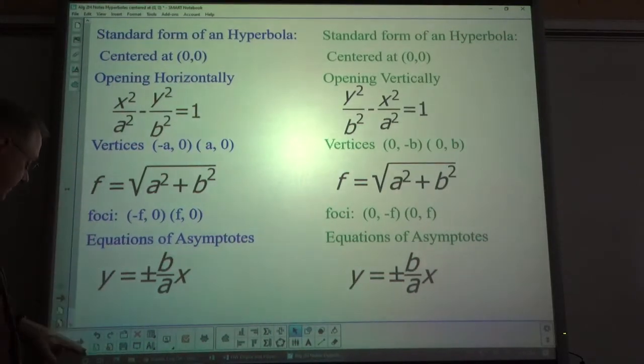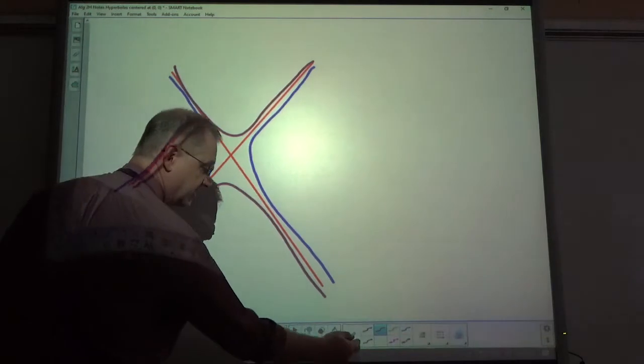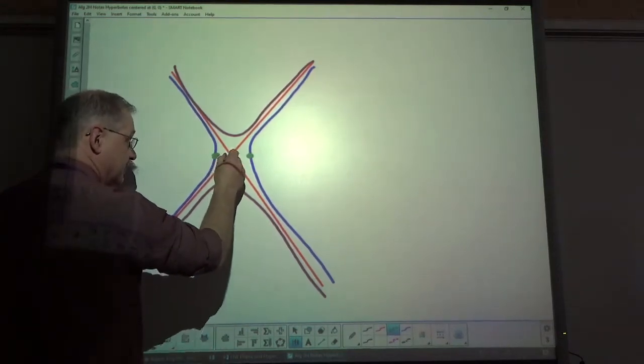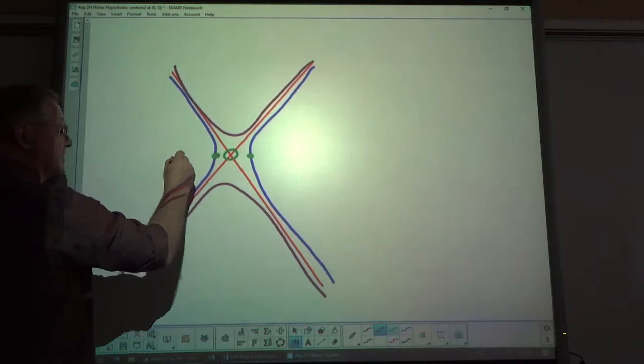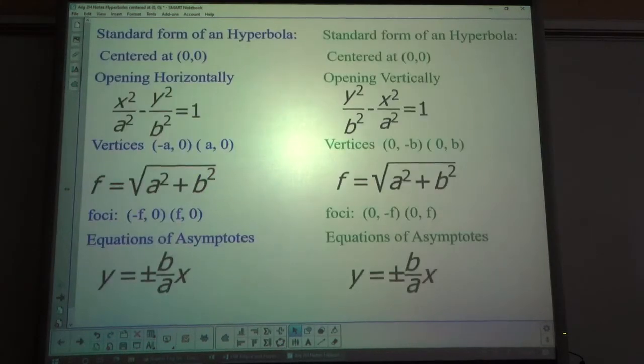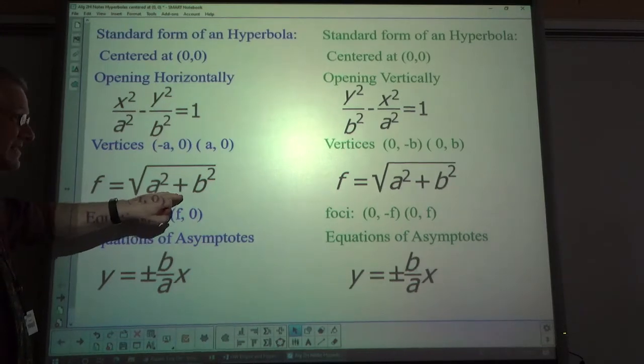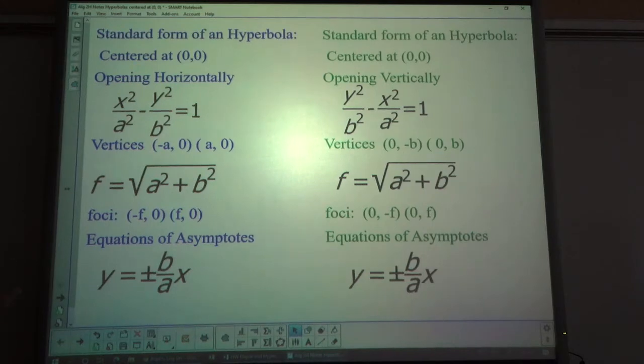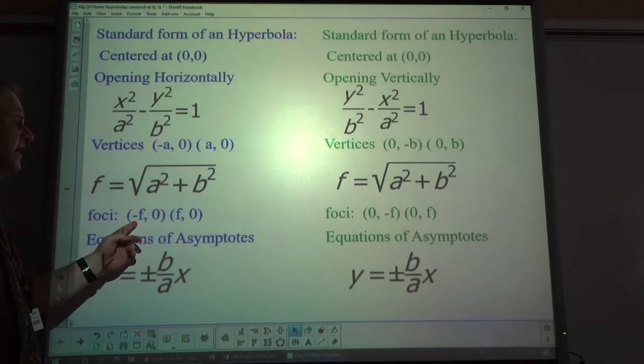The vertices, there's only one set of vertices. In this case, the vertices for the blue one here would be here and here. Obviously, there's your center. Your foci are somewhere around here. The vertices are plus or minus a, comma, zero.